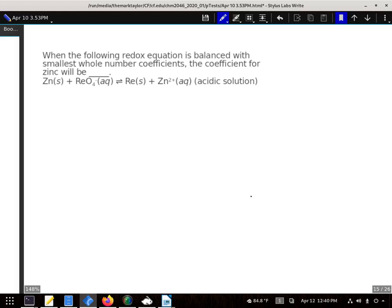When the following redox equation is balanced with the smallest whole number coefficients, the coefficient in front of the zinc is going to be what?